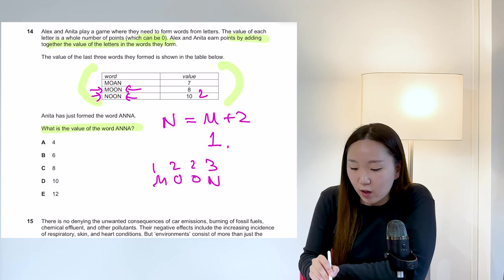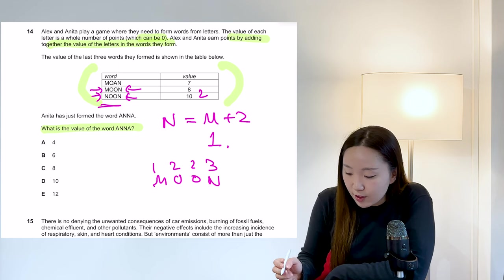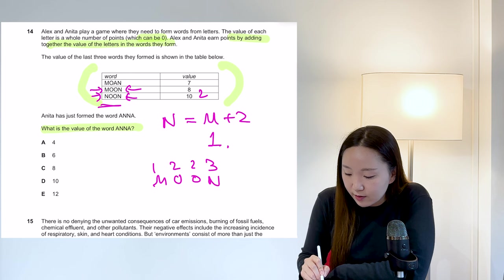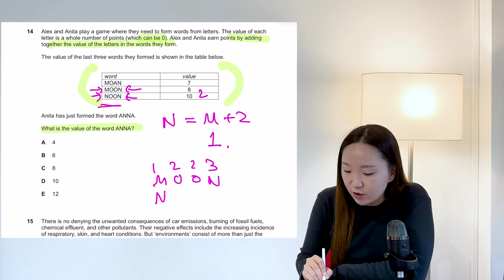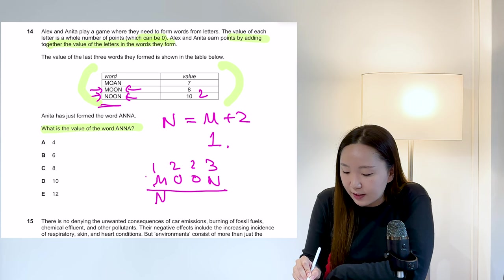We can double check that it actually works with the word noon. So noon, it would be an N here. So it would be three, six, eight, 10. So it does actually work. So I'm pretty confident in this order of letters.